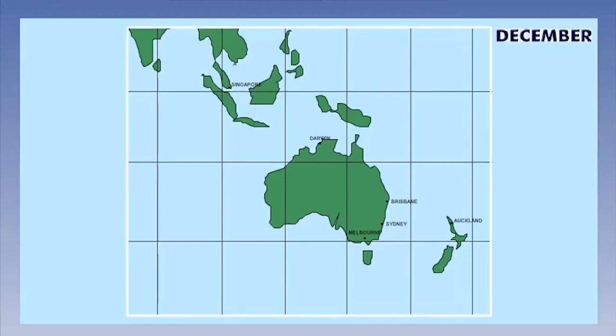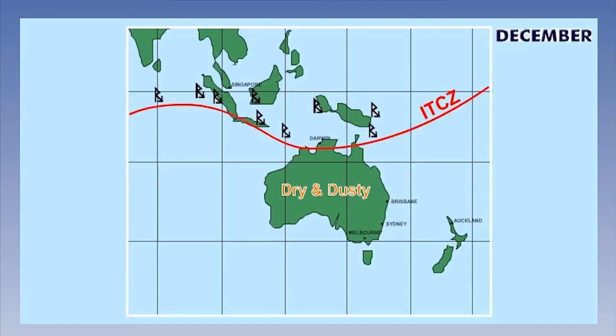The Australian weather is fairly unchangeable in general, but let's have a look at December, which of course is summer for Australia. The centre of Australia is in the region of the arid zone, and therefore is dry and dusty regardless of the time of year. However, the ITCZ is well into the southern hemisphere, and found just above the north coast. As a result, strong convective weather can be found along the northern coastlines.